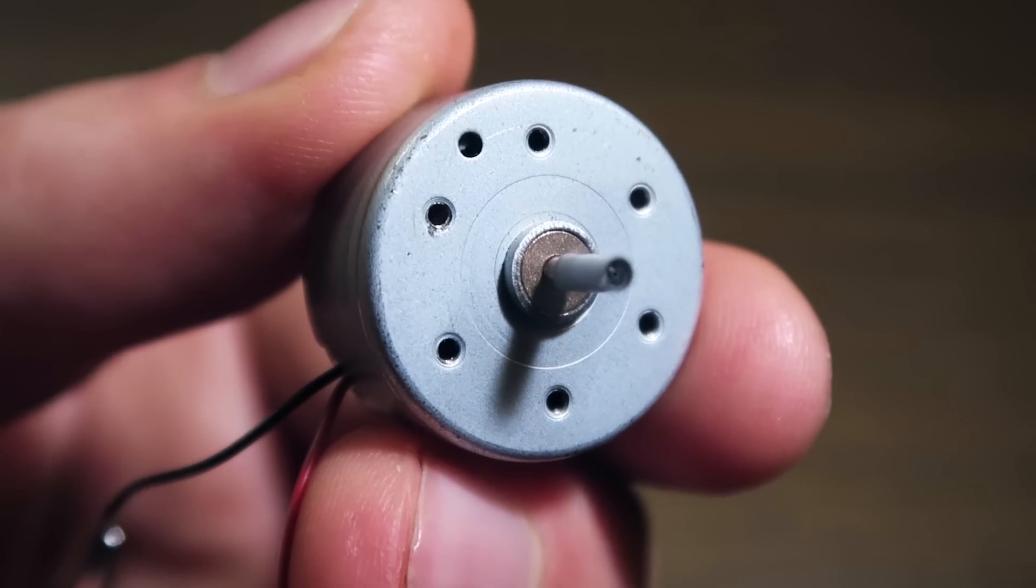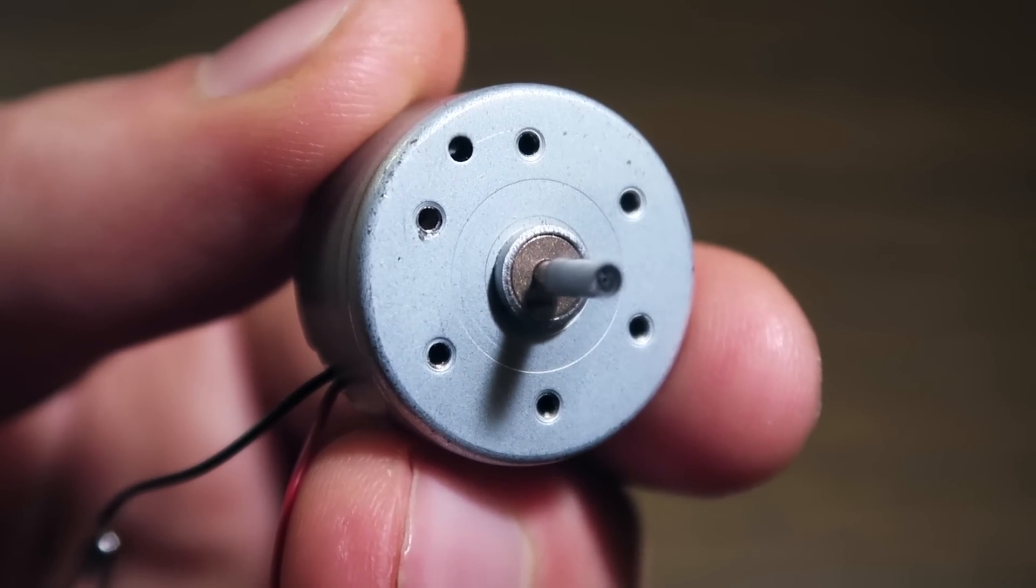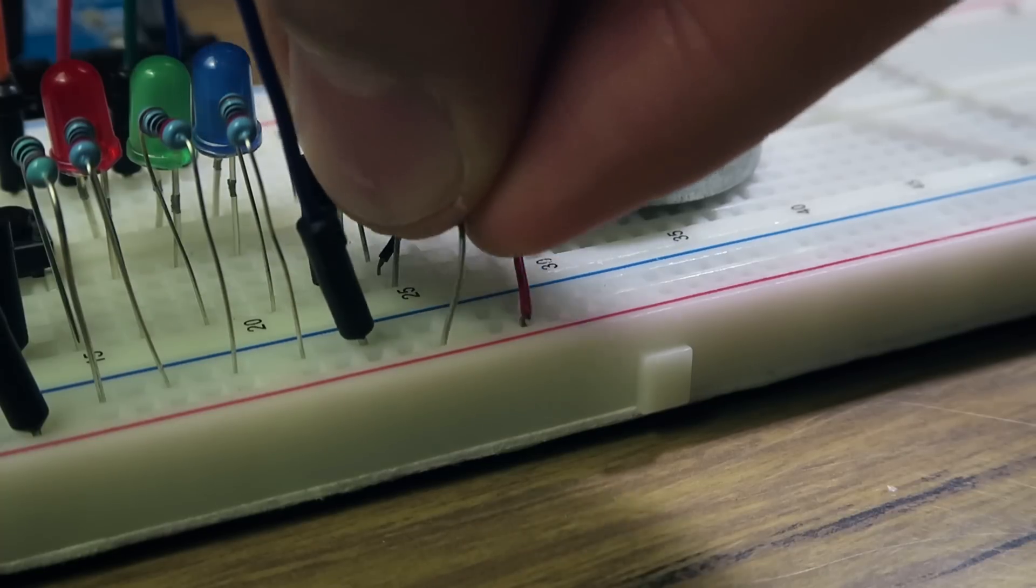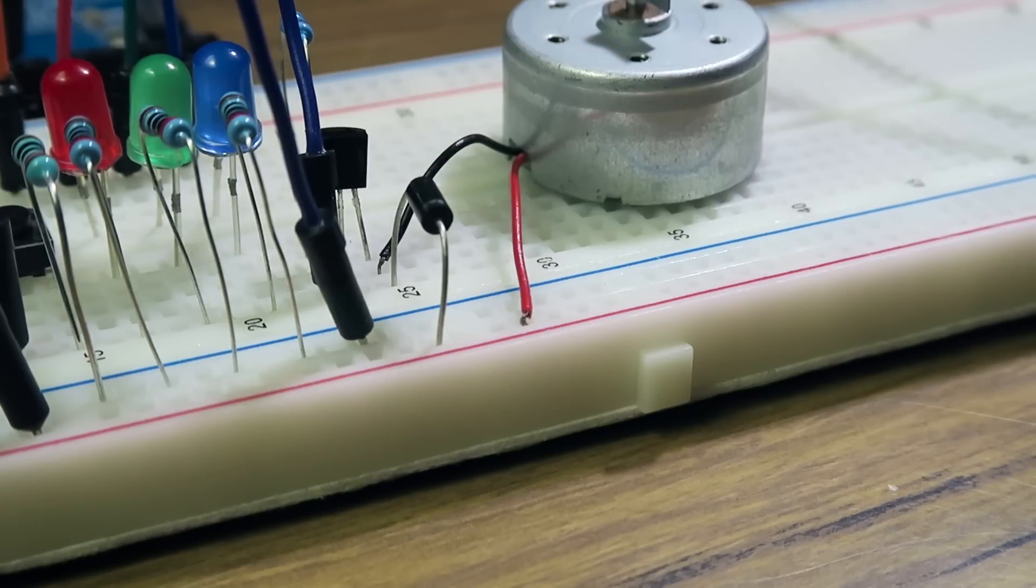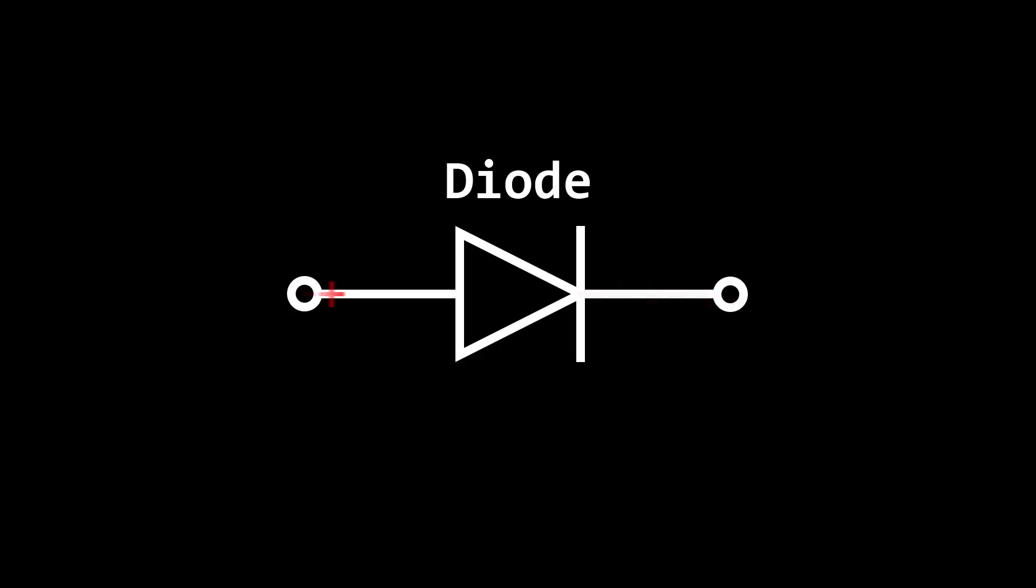The motor can create negative voltage spikes that can damage the Arduino. To prevent these, I'm putting a diode between the motor terminals. A diode only lets current flow in a single direction, so any spikes should flow directly through the diode.